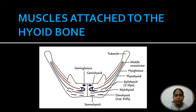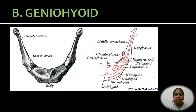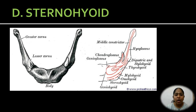There are around 9 muscles attached to the hyoid bone. The lowest fibers of the genioglossus are inserted into the upper border of the body. The geniohyoid muscle is inserted on the anterior surface of the body. The mylohyoid is also inserted on the anterior surface of the body, below the insertion of the geniohyoid. The sternohyoid is inserted into the medial part of the inferior border of the body.